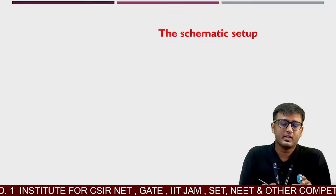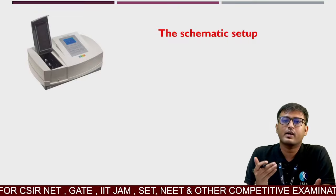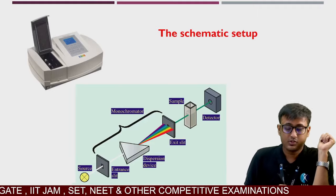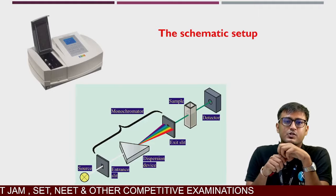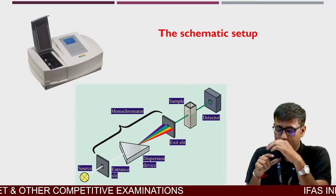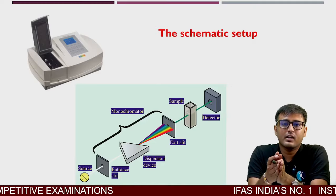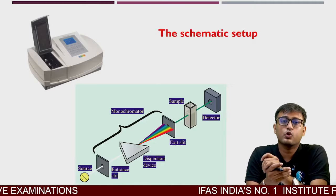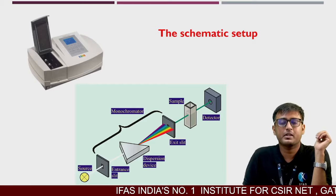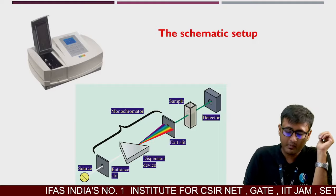UV visible spectrophotometer ka jo instrument hai, uska schematic setup agar andar se dekhein toh: it will consist of a source, an entrance slit which forms a narrow beam of light, phir uske baad ek dispersion device aega jo white light ko alag-alag components mein split kar dega — jisko hum monochromator bolte hain — phir ek exit slit, and finally woh sample ke through pass karegi and it will be detected at the other end by the detector.